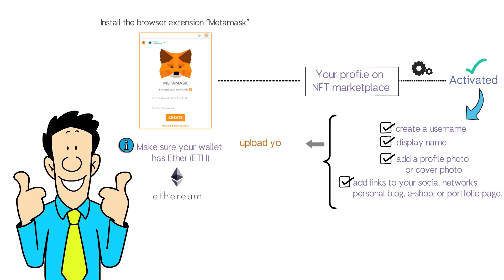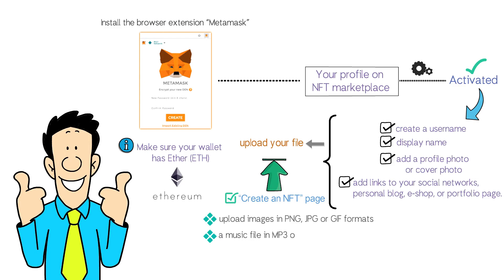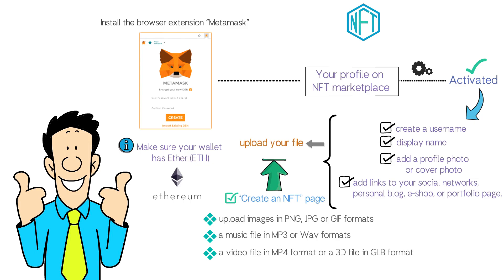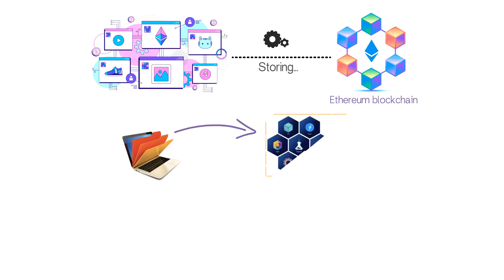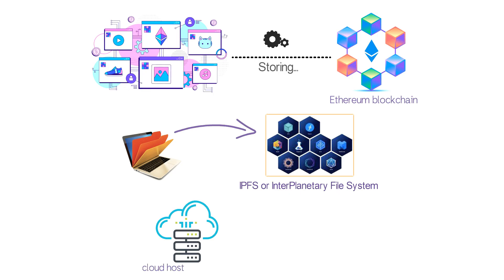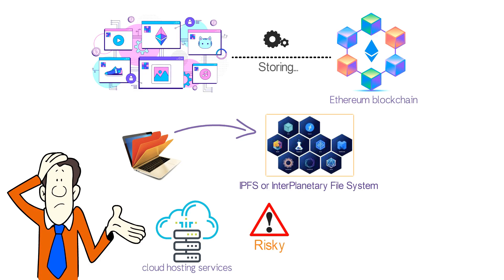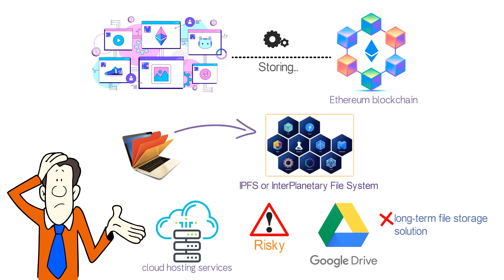Next, you will need to upload your file. The process is quite simple — look for the 'Create an NFT' page in your chosen marketplace. From there, you can upload images in PNG, JPG, or GIF formats, a music file in MP3 or WAV formats, a video file in MP4 format, or a 3D file in GLB format. Remember that an NFT is not the digital file itself, but rather a representation of the file. It makes more sense to store the digital file in a decentralized database such as IPFS (InterPlanetary File System), as using centralized cloud storage services like Google Drive may not be a better long-term storage solution for NFT items.